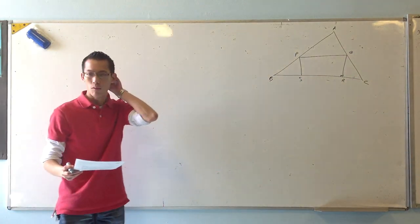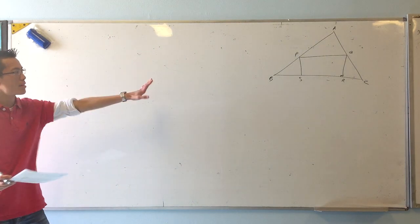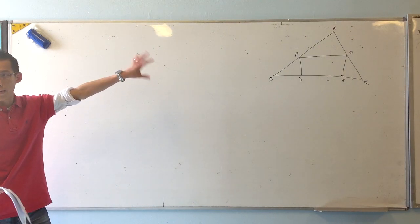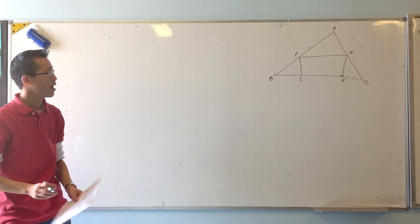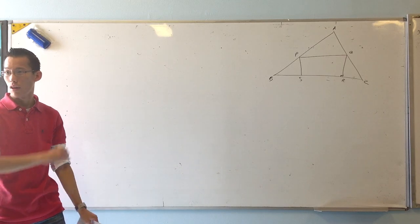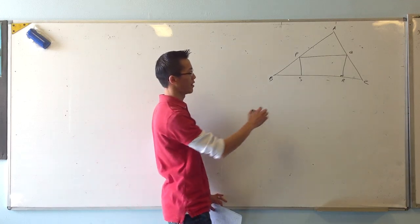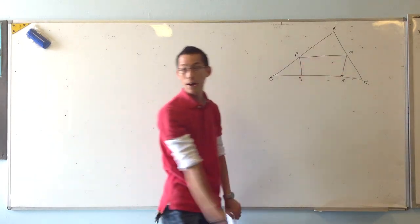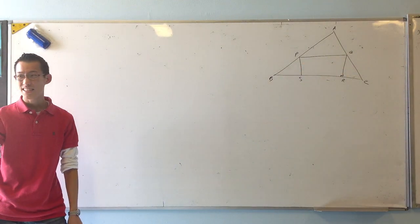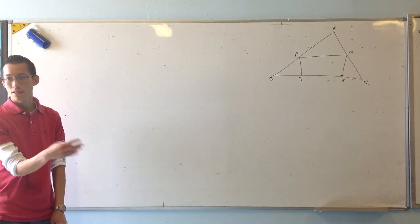Now what we want to show is that the biggest area of that rectangle can be - the biggest it can get is half of the full triangle. So we're looking for a stationary point where this area is half of that one.